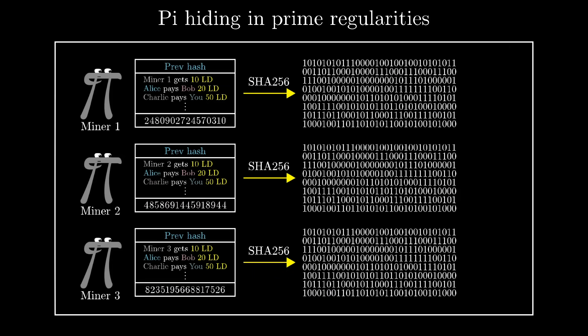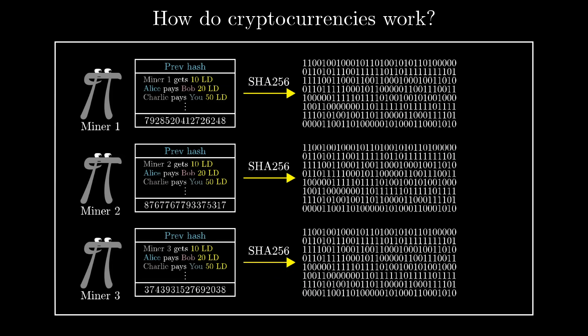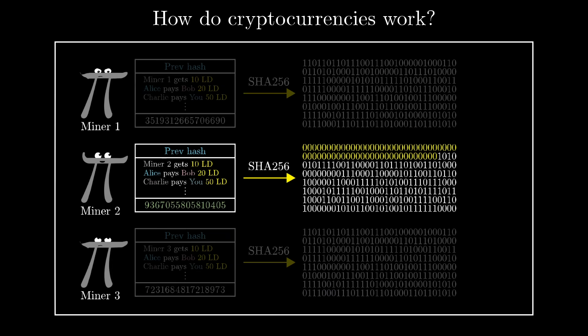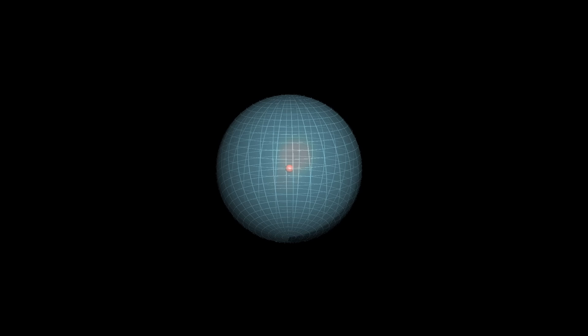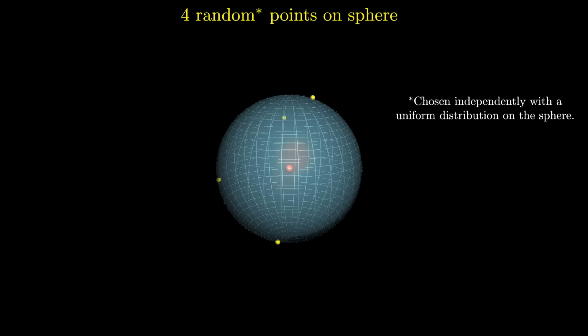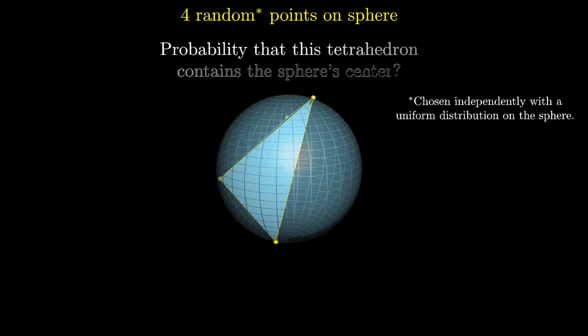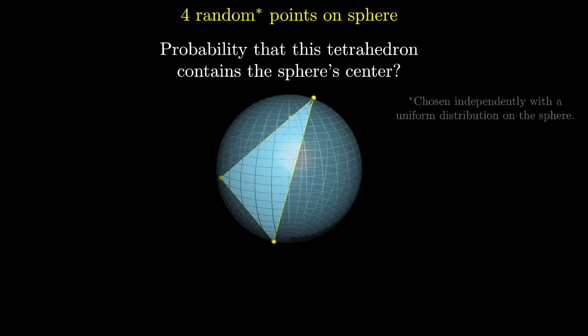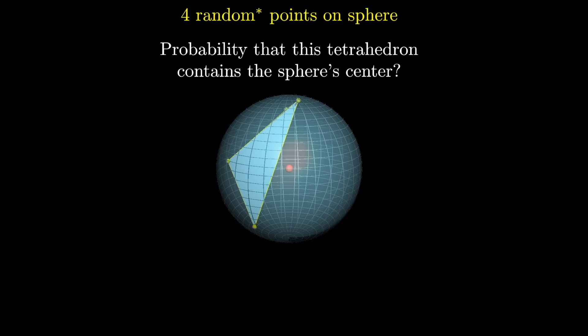That is, make a video more about the problem-solving process than about the problem used to exemplify it. So anyway, here's the question. If you choose four random points on a sphere, and consider the tetrahedron with these points as its vertices, what is the probability that the center of the sphere is inside that tetrahedron?